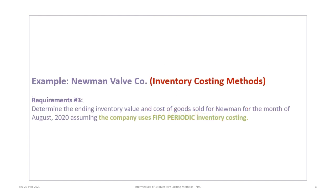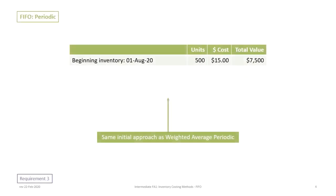As with tutorials 16A and B, this tutorial follows the Newman Valve Company example. Our third requirement is to determine the ending inventory value and cost of goods sold for the month of August, assuming the company uses the FIFO periodic costing approach. Using the FIFO periodic approach, it's the same initially as the weighted average periodic approach.